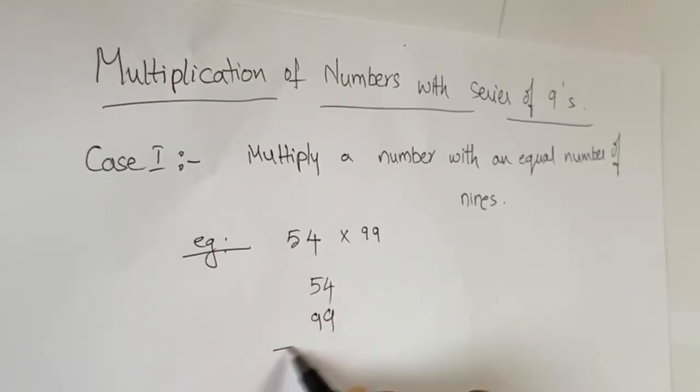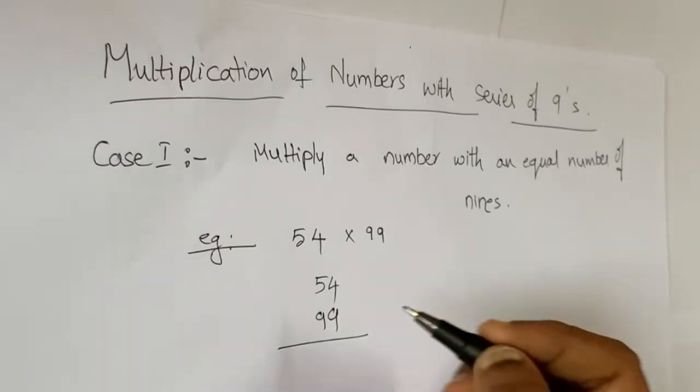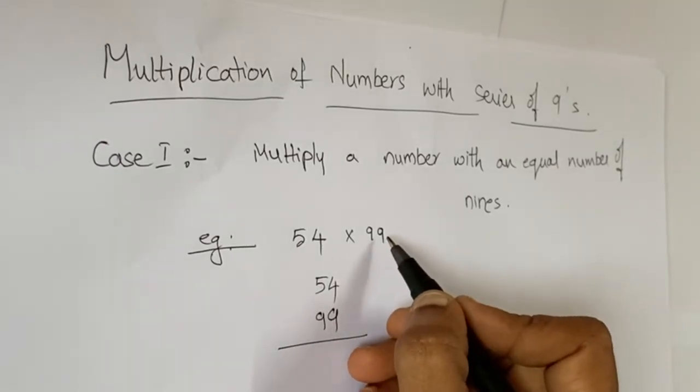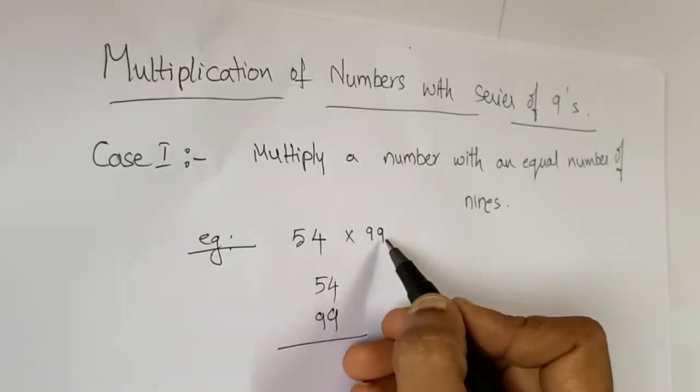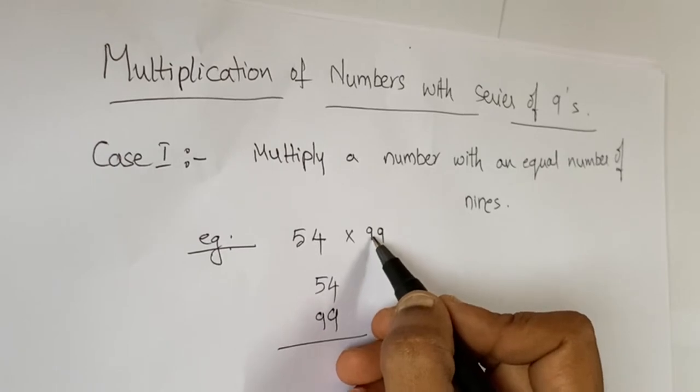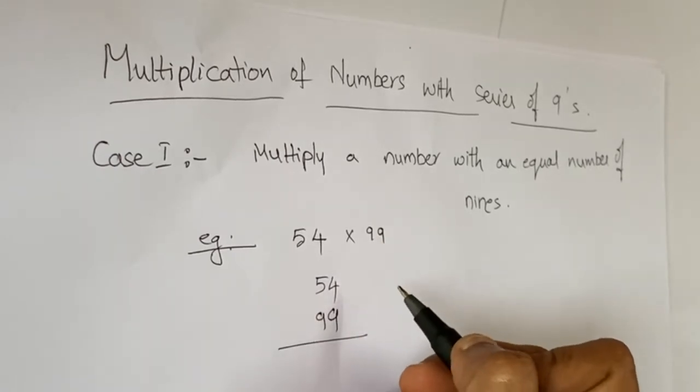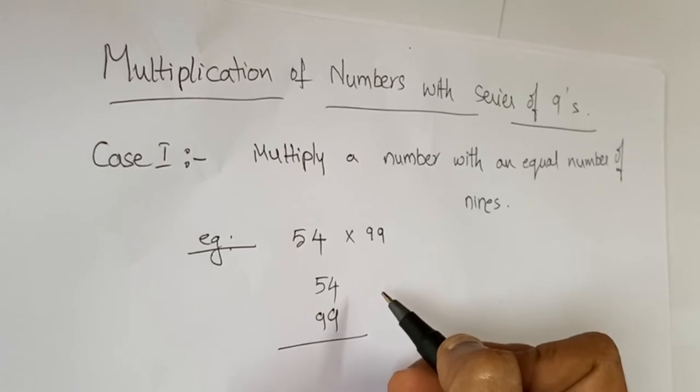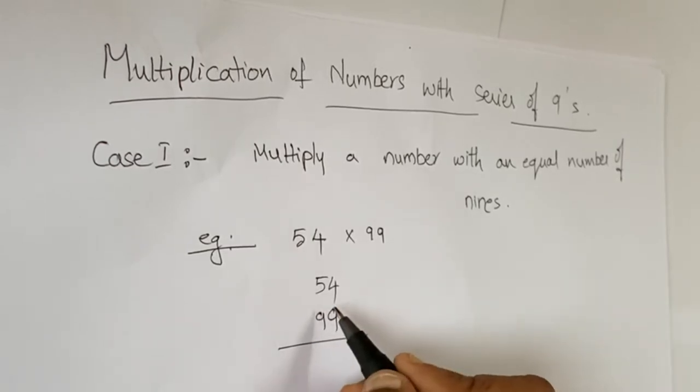We can calculate by traditional method by multiplying 54 with 9, and then multiplying 54 again with 9 and adding. So that is a cumbersome process and it takes time. So today we learn the easy method.